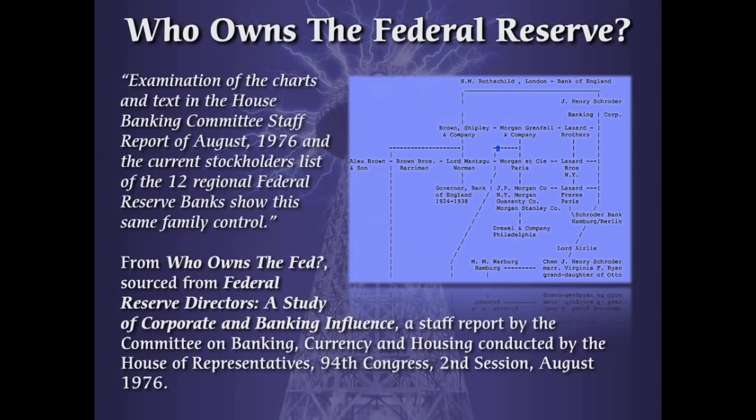Also in this document: the examination of the charts and text in the House Banking Committee staff report of August 1976 and the current stockholders list of the 12 regional Federal Reserve Banks showed the same family control — Rothschilds, Rockefellers, Morgans, Schiffs, and other high-level financiers and industrialists. This came from a document called "Who Owns the Federal Reserve?" sourced from "Federal Reserve Directors: A Study of Corporate and Banking Influence," a staff report by the Committee on Banking, Currency, and Housing, conducted by the House of Representatives, 94th Congress, Second Session, August 1976.